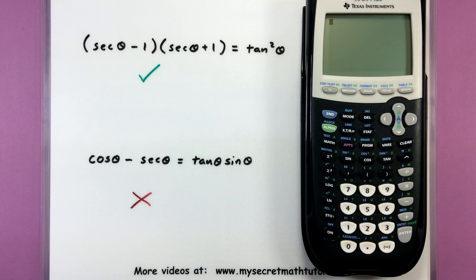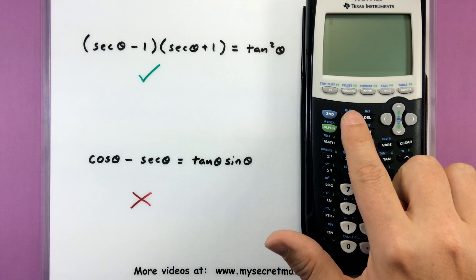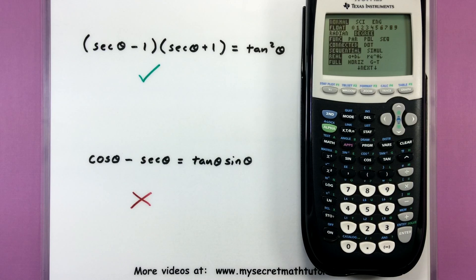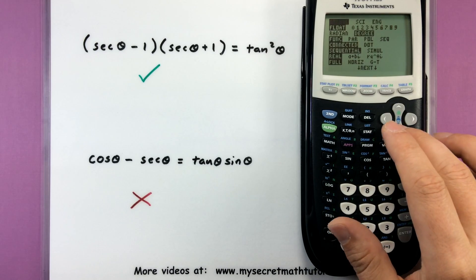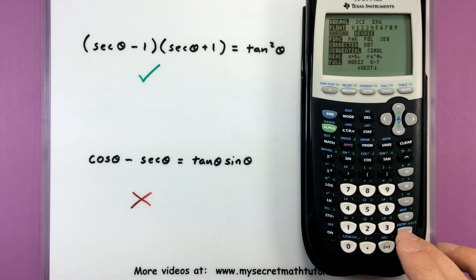Now, you'll notice that when I'm doing these, I haven't messed around with the mode whatsoever. In fact, my mode is in degrees right now. And when you're verifying identities like this, it doesn't really matter if you're in radians or degrees. Where it does make a difference, however, is when you're actually trying to verify key values.